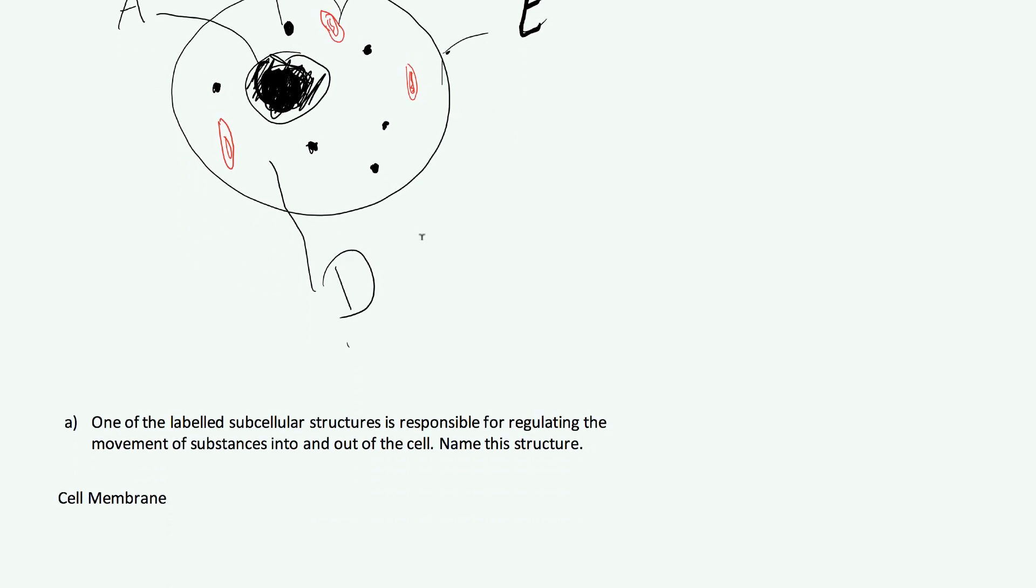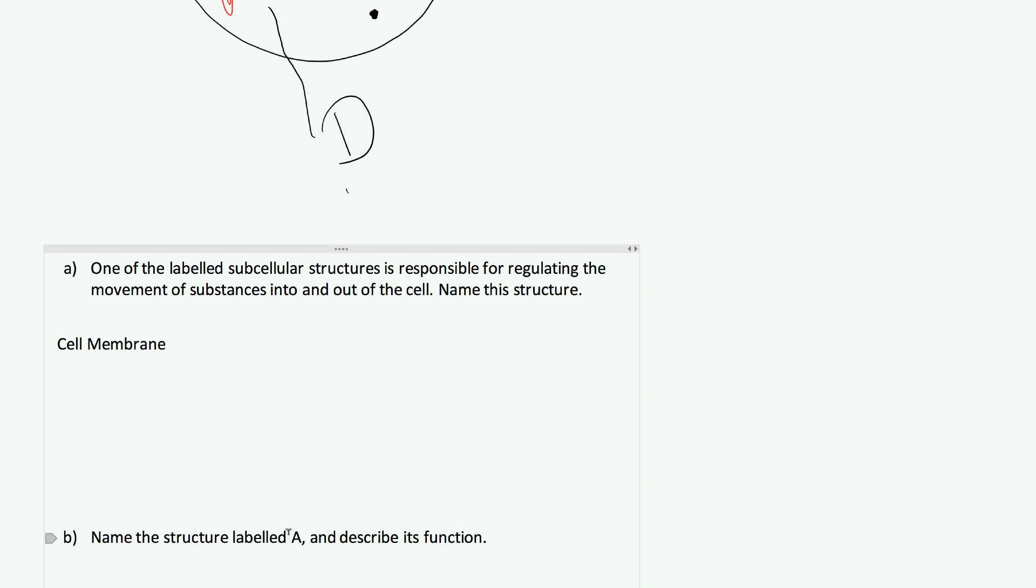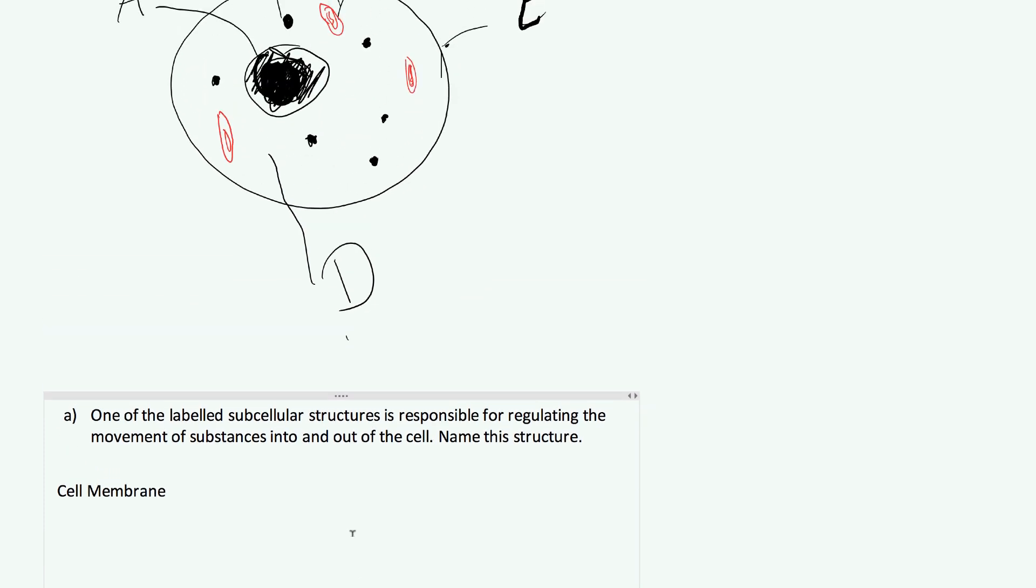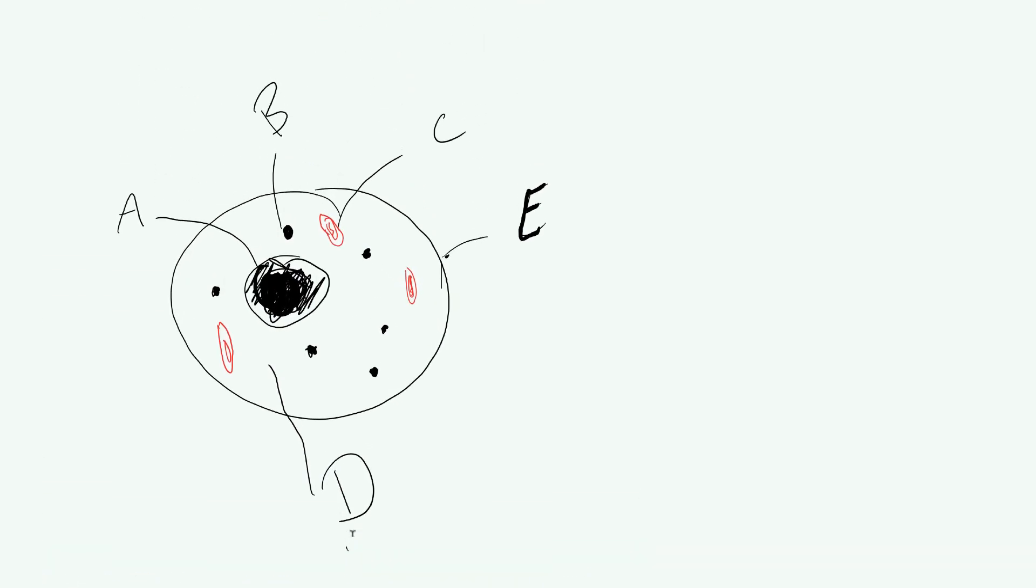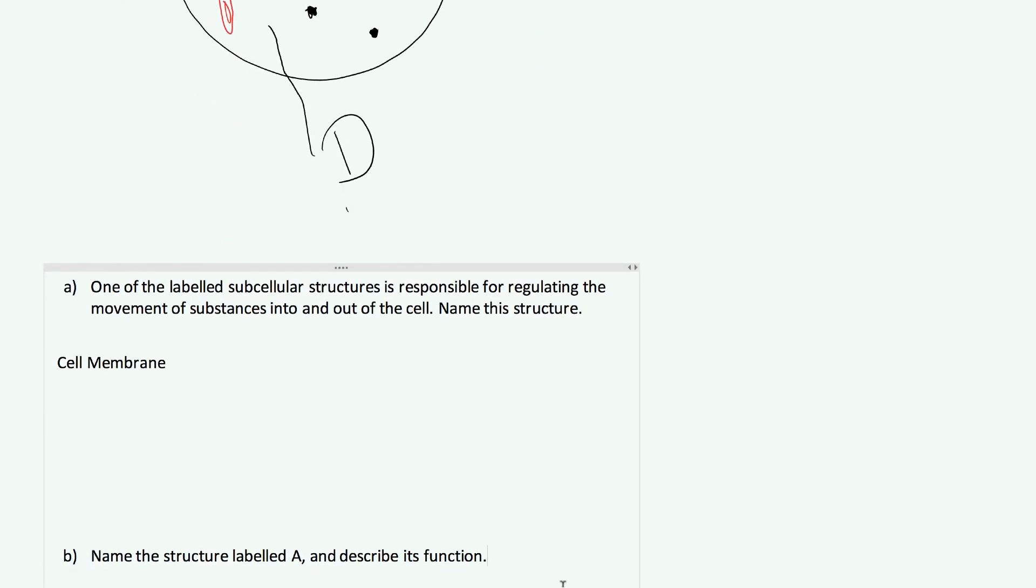Moving on we have part B. It says name the structure labeled A and describe its function. So we go up here, you can see the structure A is this blob in the middle. In a eukaryotic cell, which an animal cell is, they all have this blob, with a few exceptions of specialized cells. But in general they have this and it's called the nucleus. So the first thing I'm going to do is come down here and write the nucleus.